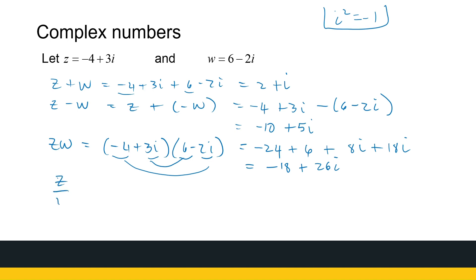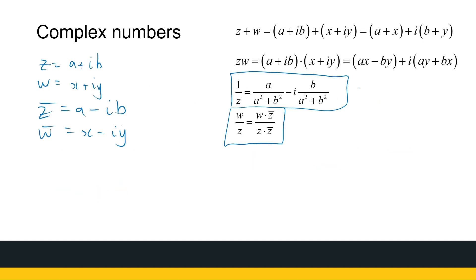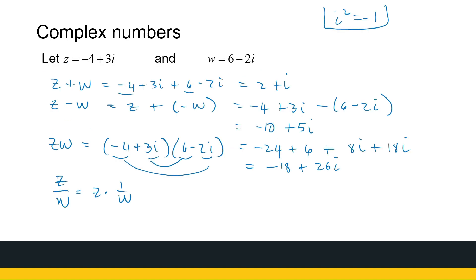Now let's look at Z divided by W, which is Z times 1 over W. We could use the multiplicative inverse formula, but instead we'll use a simpler technique: multiply the numerator and denominator by W's complex conjugate. This works out nicely because it eliminates the imaginary part of the denominator.